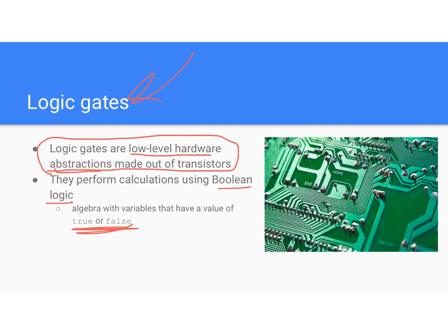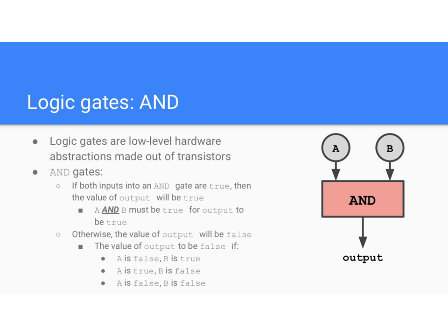I have a couple examples here with logic gates, and we'll get to practice with them. You'll see the sorts of questions that appear on the AP test. Let's start with an AND gate. You can wire up a logic gate to handle AND logic. If both inputs A and B are true, then the output will also be true. The requirement is that A and B must both be true for an AND gate to return true.